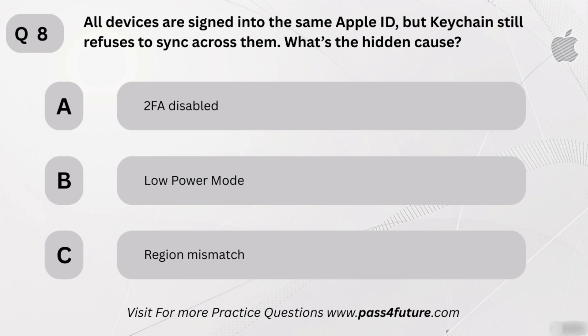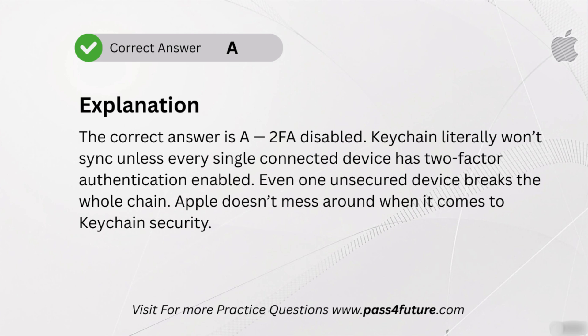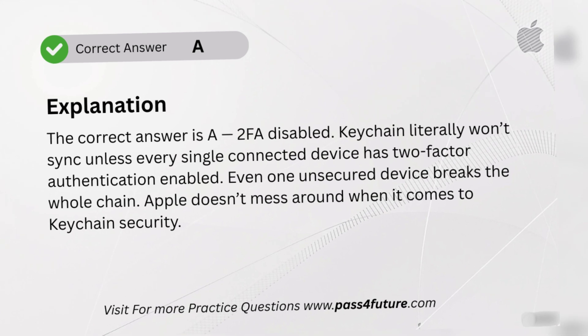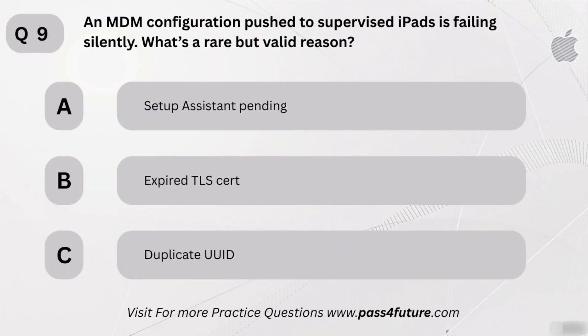Let's dig deeper. All devices are signed into the same Apple ID, but Keychain still refuses to sync across them. What's the hidden cause? A. 2FA disabled. B. Low power mode. C. Region mismatch. The correct answer is A — 2FA disabled. Keychain literally won't sync unless every single connected device has two-factor authentication enabled. Even one unsecured device breaks the whole chain. Apple doesn't mess around when it comes to Keychain security.